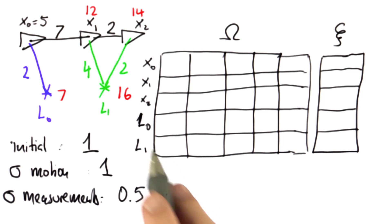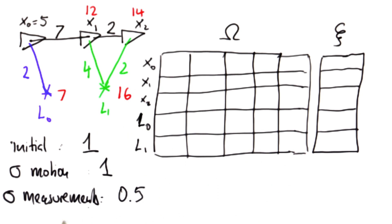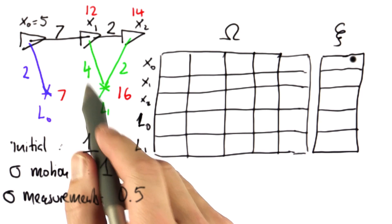And remember, we weigh those updates with 1 over sigma, which in the measurement case would therefore be 2. I want you to fill in the values for sigma and for xi for this specific example.